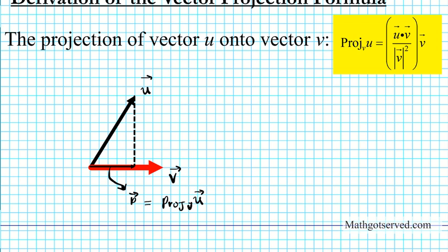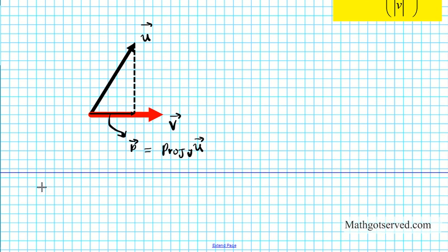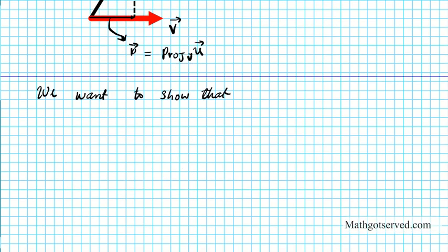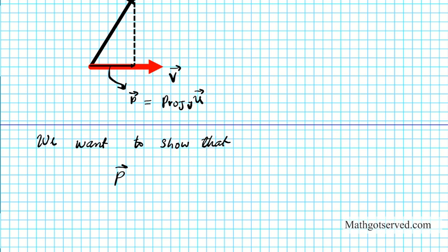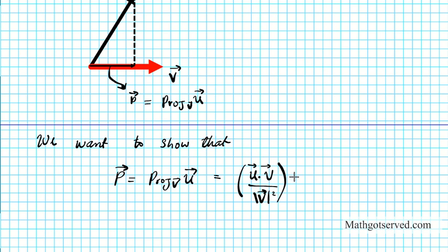Our goal in this derivation is to show that vector p, which is the projection of vector u onto v, equals the quantity u dot v divided by the magnitude of vector v squared, multiplied by vector v. This is the objective of the whole derivation.